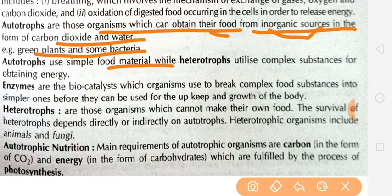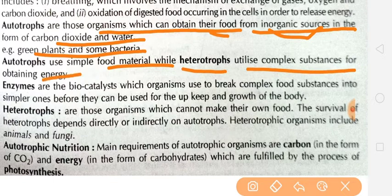Heterotrophs utilize complex substances for obtaining energy. Heterotrophs are organisms that do not prepare their own food — they utilize food prepared by autotrophs. While autotrophs like green plants and some algae and bacteria make their own food, heterotrophs such as human beings, lions, and elephants do not make their own food.